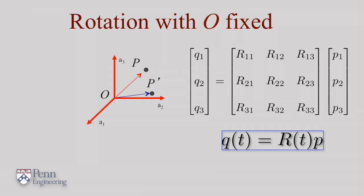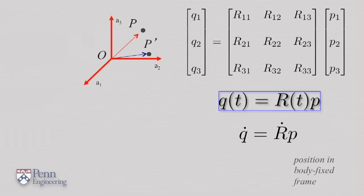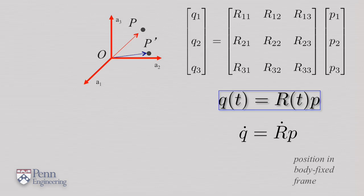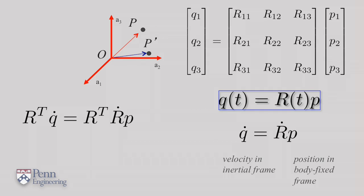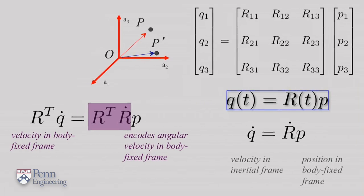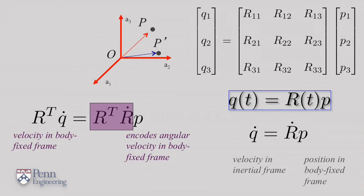Let's take this equation and differentiate it. If you differentiate both sides, taking advantage of the fact that p remains constant, the derivatives that appear are only the derivatives of q and the derivatives of R. So p is the position in a body-fixed frame, while q-dot is the velocity in the inertial frame. If we pre-multiply both sides by the transpose of the rotation matrix, on the right-hand side we get the familiar quantity R^T Ṙ, which encodes the angular velocity in the body-fixed frame.